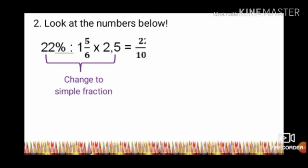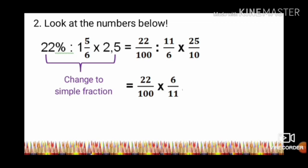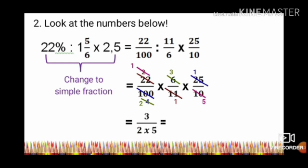So, this equals 22/100 times 6/11 times 25/10. Simplify: 22 and 11 becomes 2 and 1. 25 and 100 becomes 1 and 4. 10 and 4 becomes 5 and 2. 6 and 2 becomes 3 and 1. So, 2 times 5 over 3 equals 10/3.